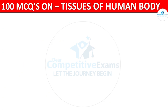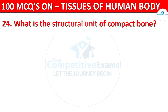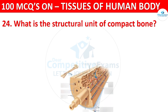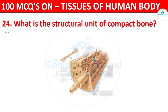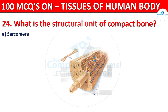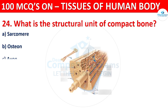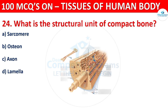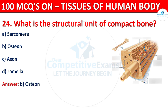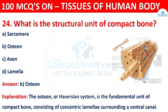Question number twenty-four: what is the structural unit of compact bone? The correct answer is B, that is the osteon. The osteon, or Haversian system, is the fundamental unit of compact bone, consisting of concentric lamellae surrounding a central canal.